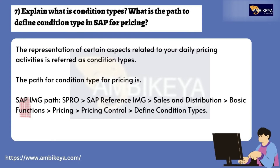Question number seven: Explain what condition types are and what is the path to define condition type in SAP for pricing. Condition types are representations of certain aspects related to your daily pricing activities. The path to define condition types for pricing is: SPRO > SAP Reference IMG > Sales and Distribution > Basic Functions > Pricing > Pricing Control > Define Condition Types.